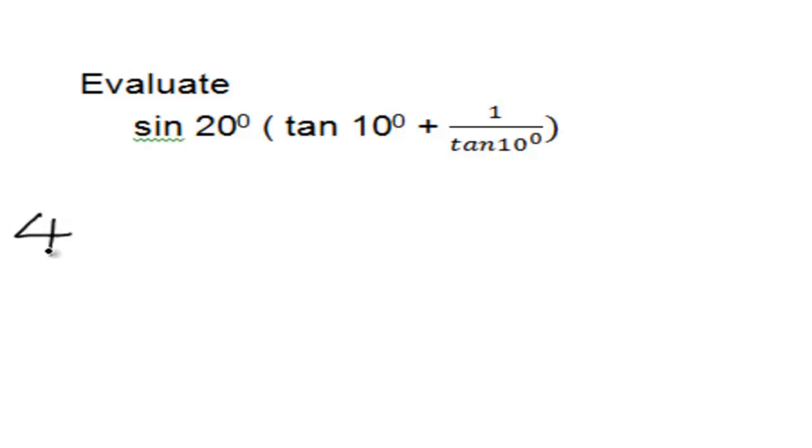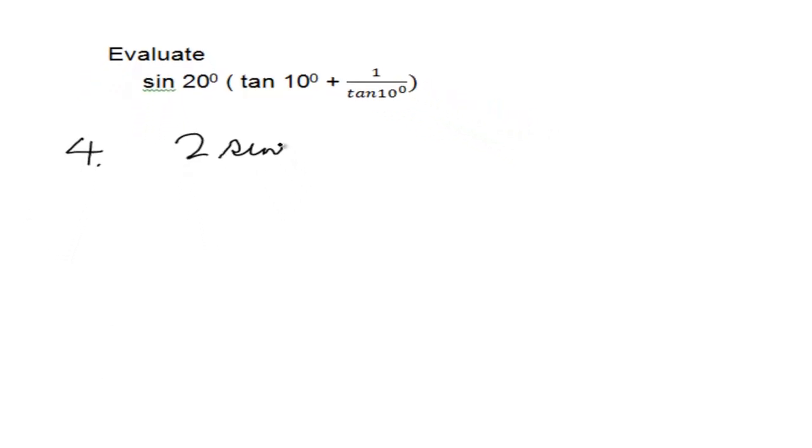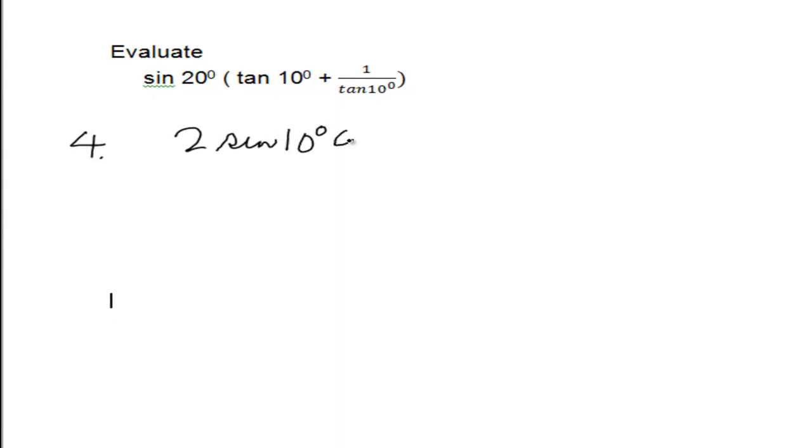You'll notice we've got sin 20° tan 10°. Straight away I'm going to change sin 20° to sin 2θ, which becomes sin 10° cos 10°. Then I've got tan 10°, which is sin 10° over cos 10°.